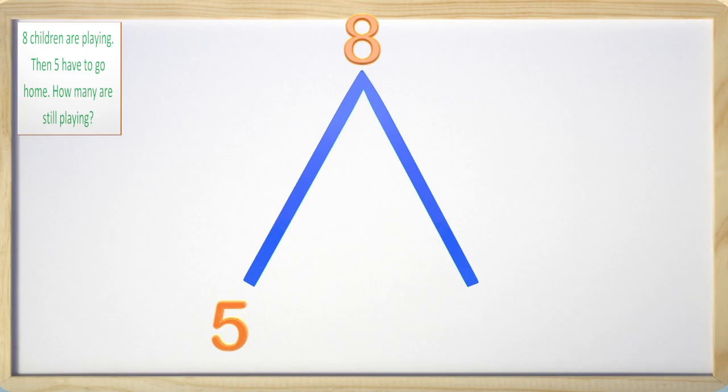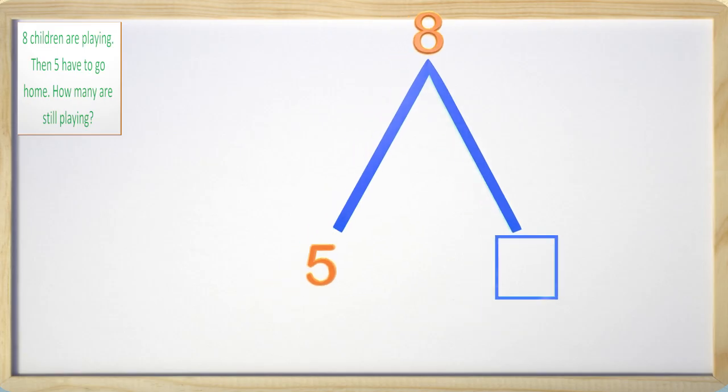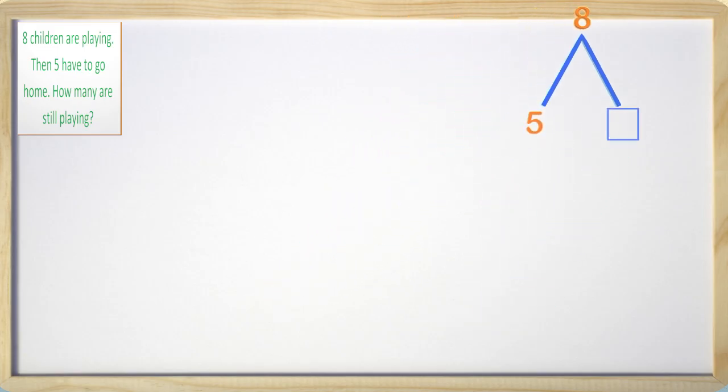We need to find out how many of those eight children are still playing after five went home. As we can see, we have a total and we have one of our partners. We need to find out the other partner. With this information, we can now write an equation. What is the equation?